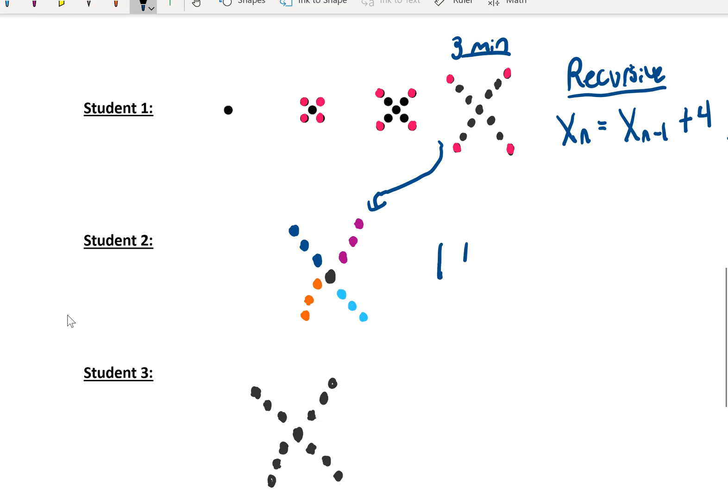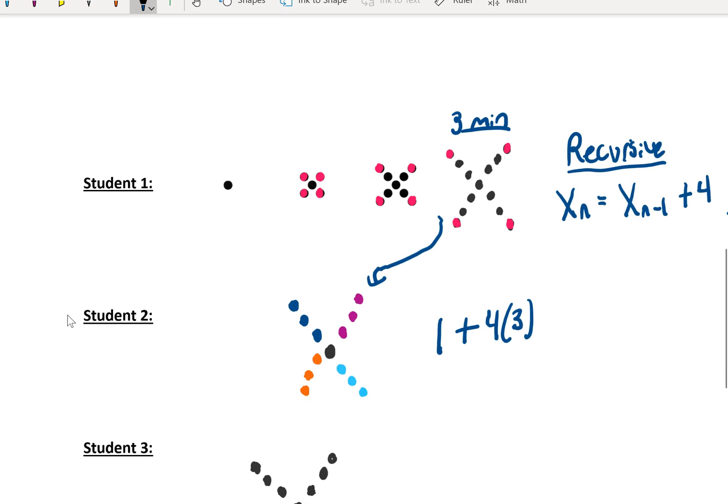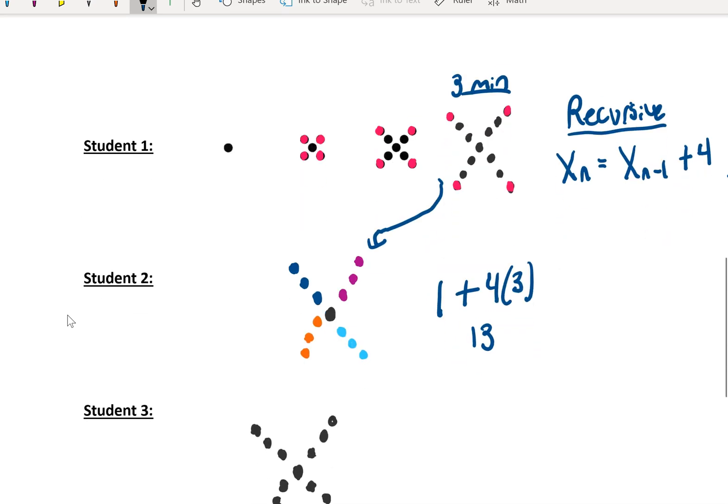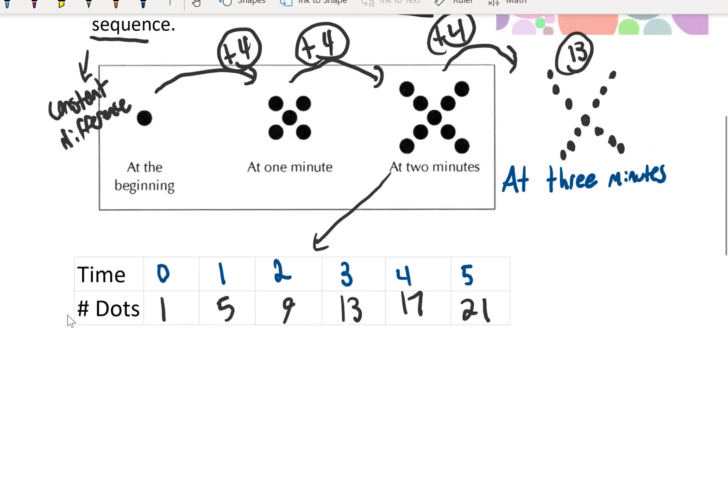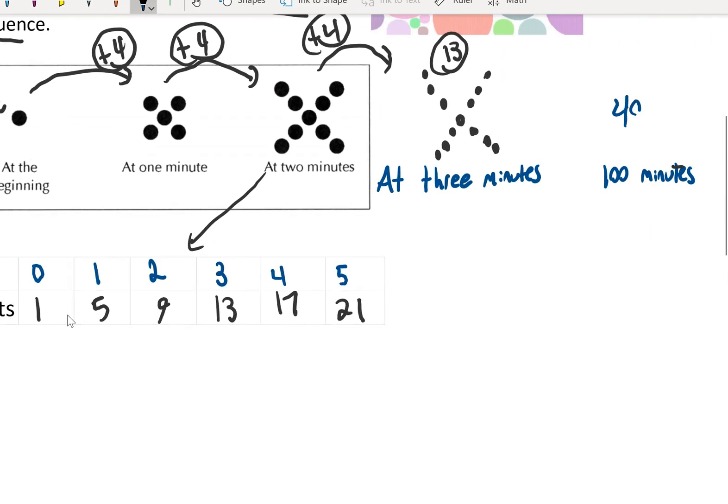We have one dot and we have four arms. In each arm, there are a certain number of dots. In this case, at three minutes, there are three dots in each arm. So we get one plus four times three, which is 13 dots at three minutes, just like we did earlier by just extending the pictures using recursive thinking. But if I use this idea now to figure out how many dots there will be at 100 minutes, that's one plus four times 100, because there would be 100 dots in each of the four arms, plus the one dot in the center. That way, we get 401 dots at 100 minutes. Let's go back up here and fill that in. 401 dots. That's nice.